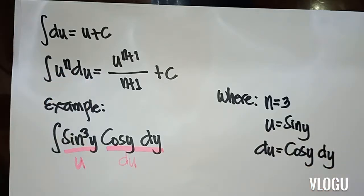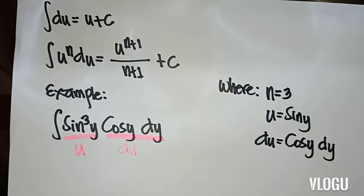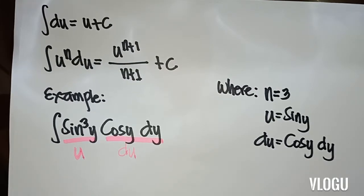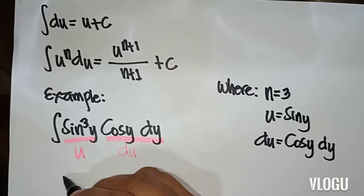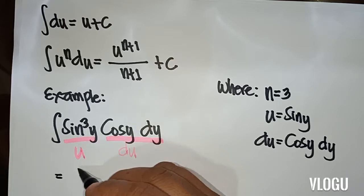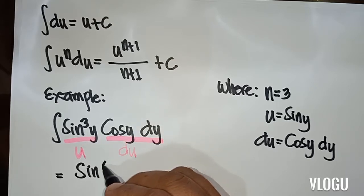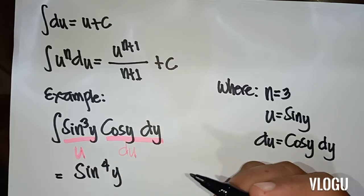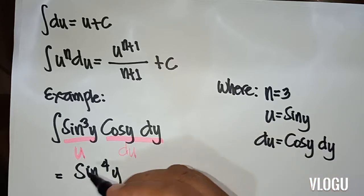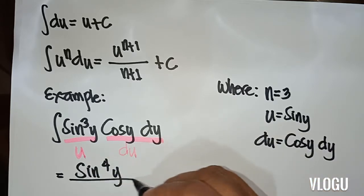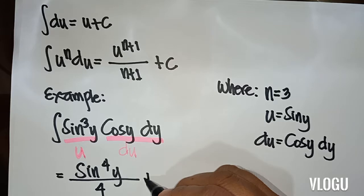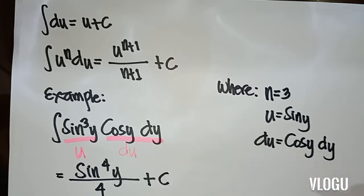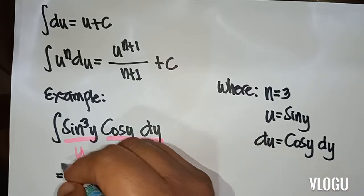Since we have u to the n du, we use the power formula: u to the n plus 1 over n plus 1 plus C. So the answer is sin to the fourth y over 4 plus C.